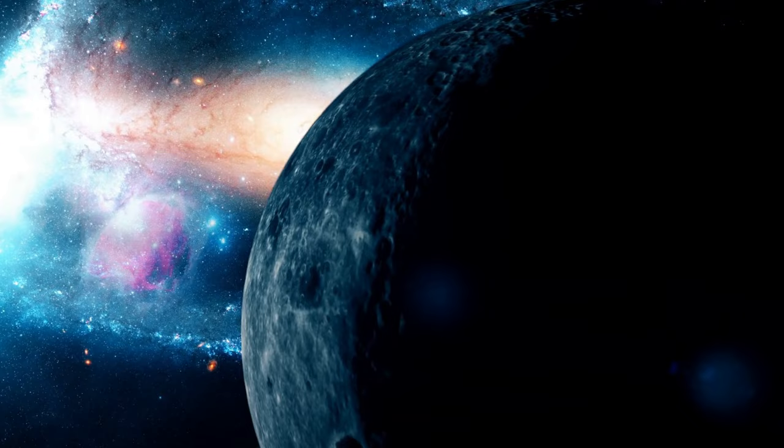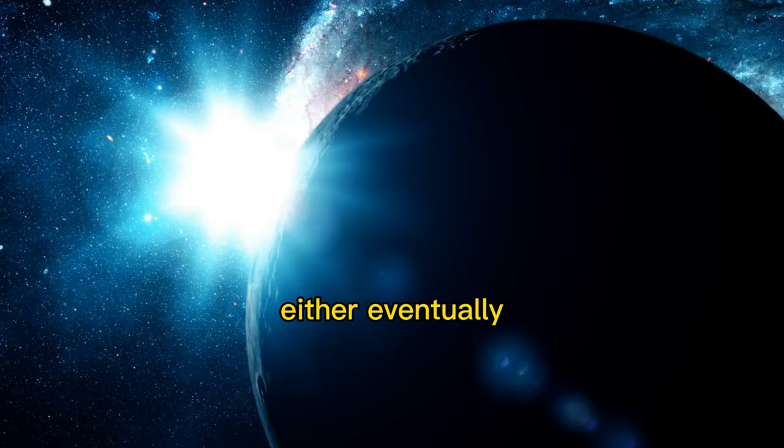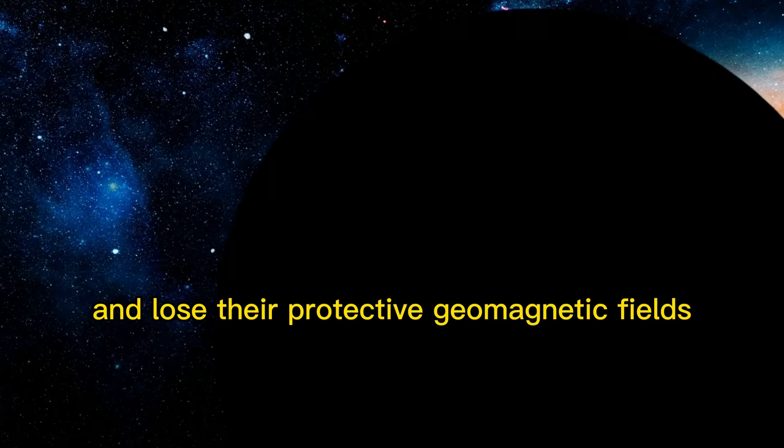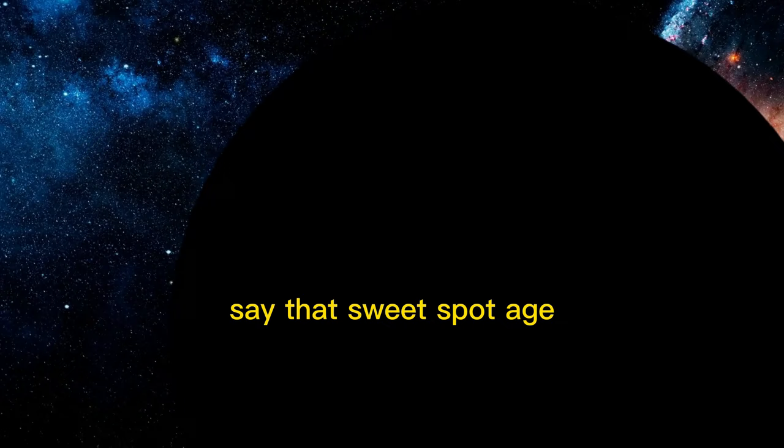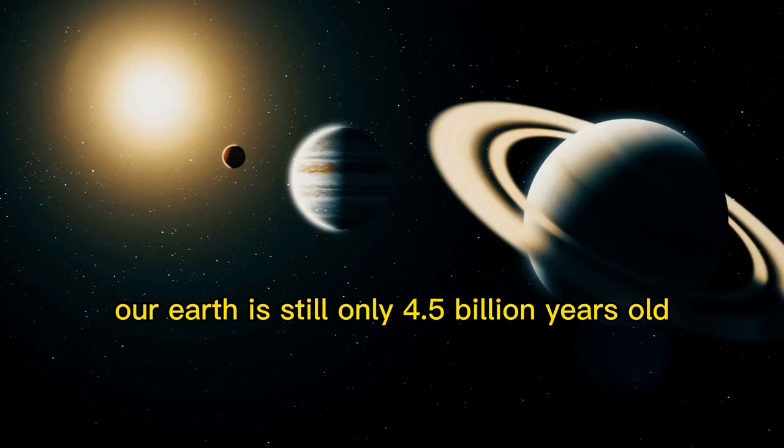Older planets are better, but they shouldn't be too old either. Eventually, they will have exhausted their interior geothermal heat and lose their protective geomagnetic fields. What is the ideal age, then? The researchers say that sweet-spot age for a planet is about 5 billion to 8 billion years old. Our Earth is still only 4.5 billion years old.